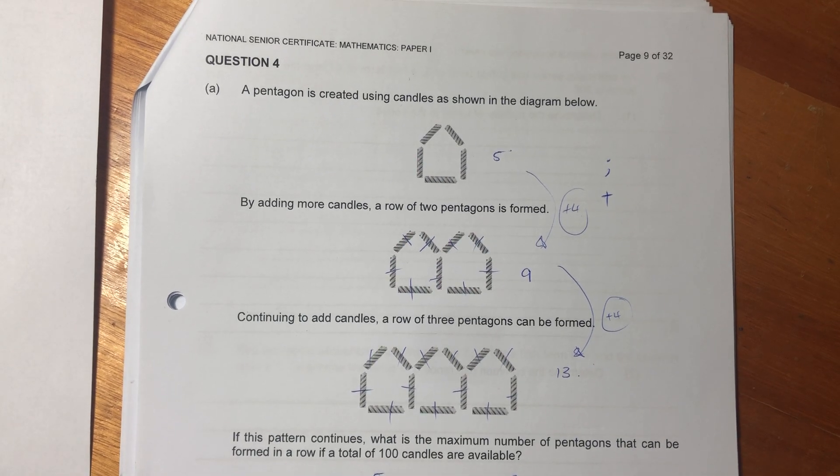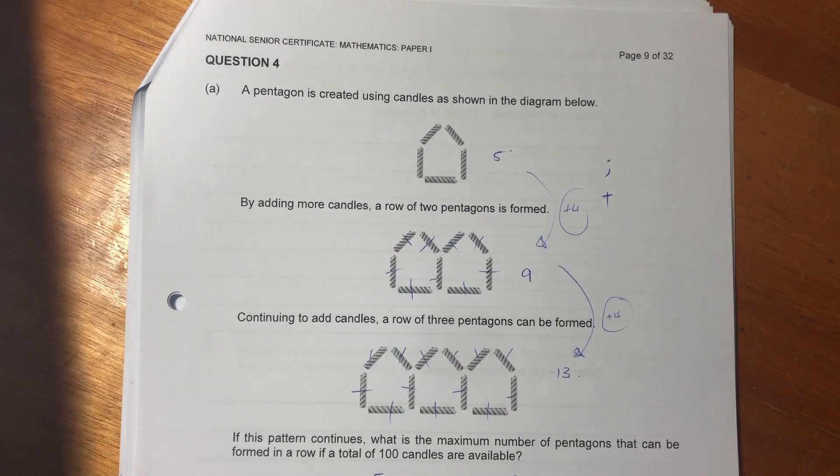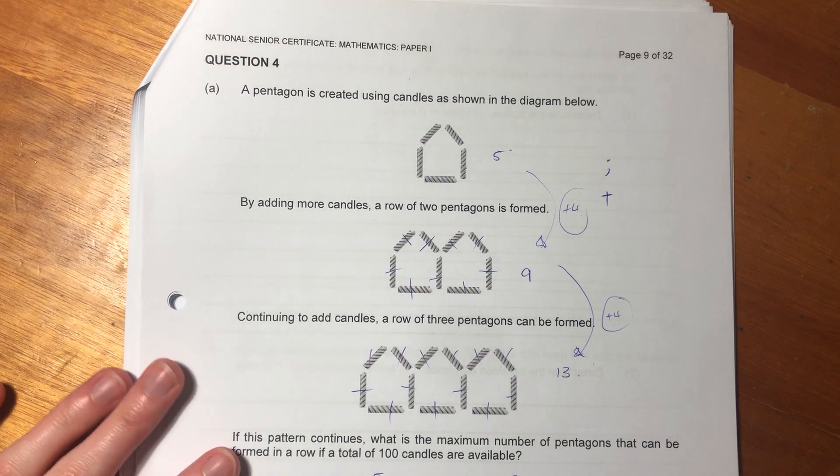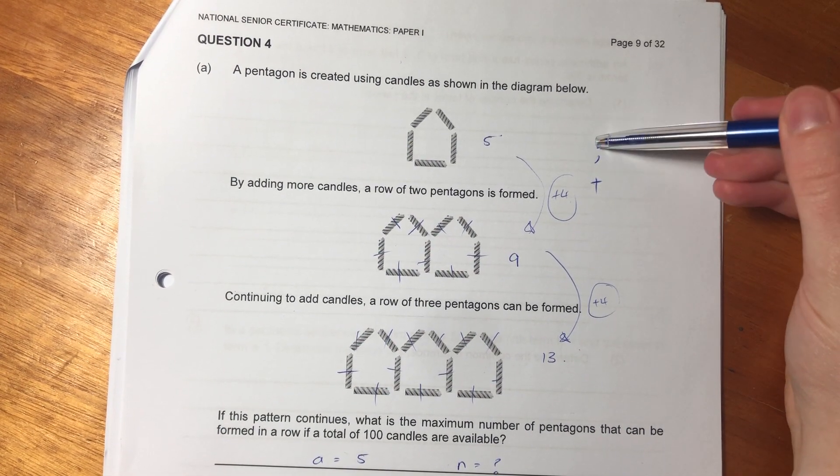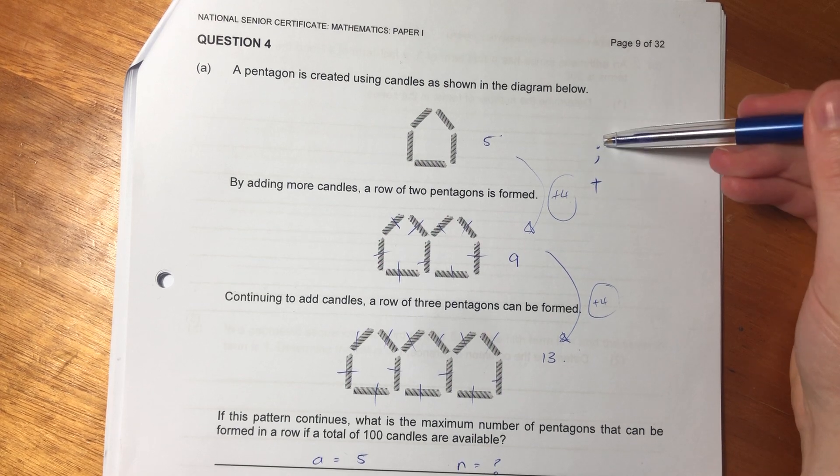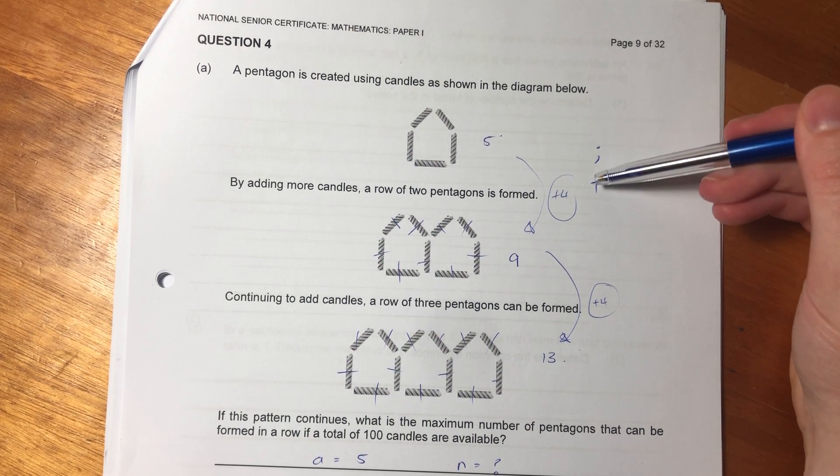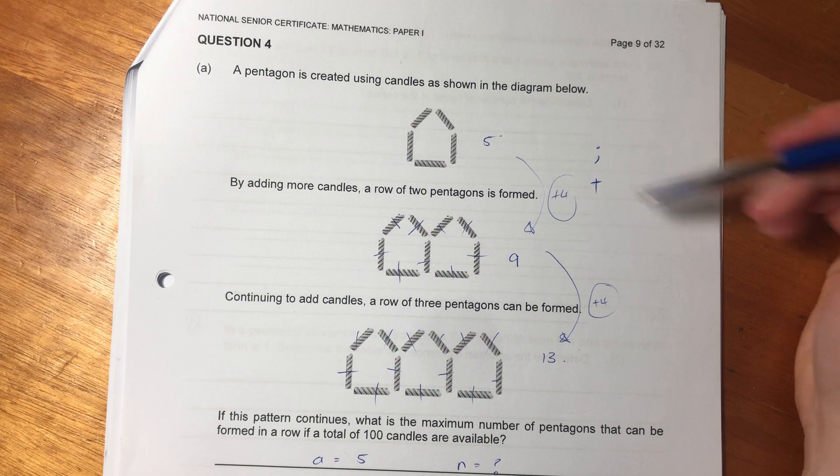Hey guys, we're moving on to question four now. This question is focused very much on sequences and series. Importantly, a sequence is separated by semicolons. The terms are separated by semicolons. A series, the terms are added together, right, with an addition sign.